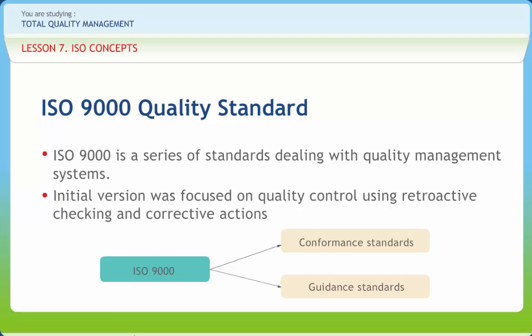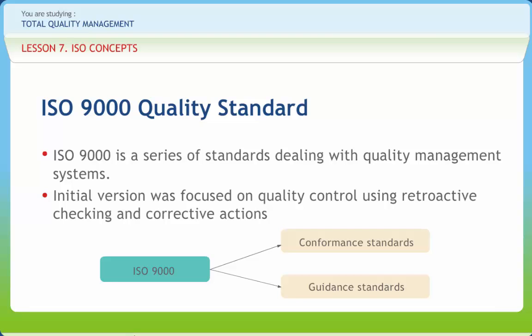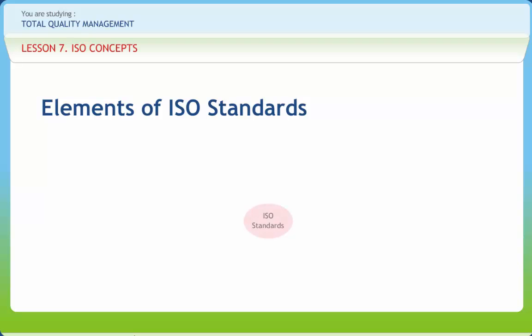ISO 9001 contains requirements for quality assurance in design, development, production, installation, and servicing activities. The ISO standard series includes ISO 9000, ISO 9001, ISO 9002, ISO 9003, ISO 14001, ISO 9004-2, ISO 9004, and others. The ISO standard specifies 20 elements in a quality system.